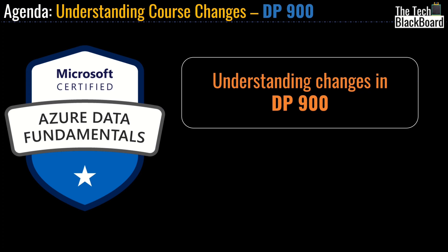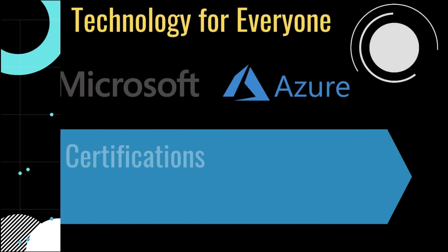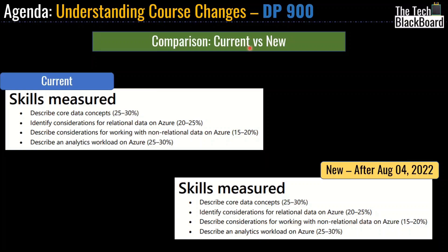First, I will brief you on the changes here in this slide and then take you to the Microsoft official documentation. Now on your screen is the comparison of skill measures — current versus new. On the top left of your screen, you can see the current skill measure which is currently applicable, and on the bottom right, the new skill measures which will be applicable after 4th of August. Here in the current setup, first we have 'describe core data concepts' which is 25 to 30 percent — same in the new setup. Then we have 'identify considerations for relational data on Azure' which is 20 to 25 percent — exactly the same in the new setup as well.